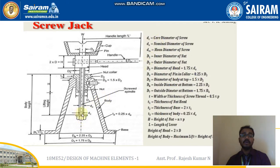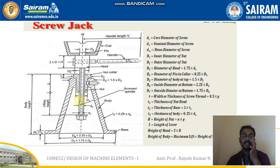The design parameters for the screw include: DC — the core diameter; DO — the nominal or outer diameter; DM — the mean or average diameter of the screw; D1 — the inner diameter of the nut; D2 — the outer diameter of the nut; D3 — the diameter of the head, with formula 1.75 × DO (the nominal diameter of the screw); D4 — the diameter of the pin in collar, which is 0.25 × D3; D5 — the diameter of the body at the top, which is 1.5 × D2; and D6 — the inside diameter of the bottom, which is 2.25 × D2.